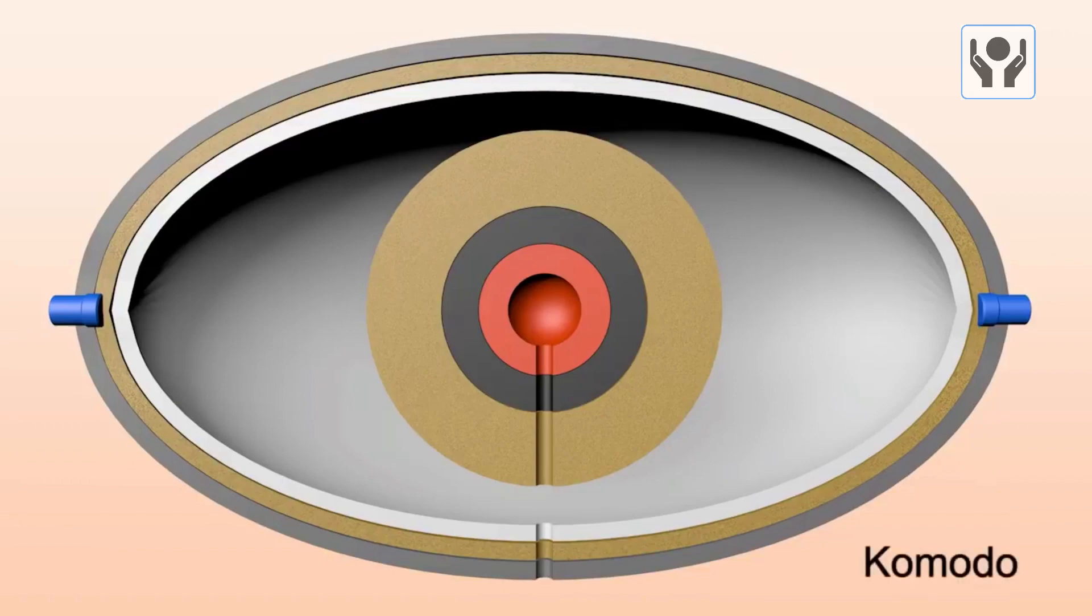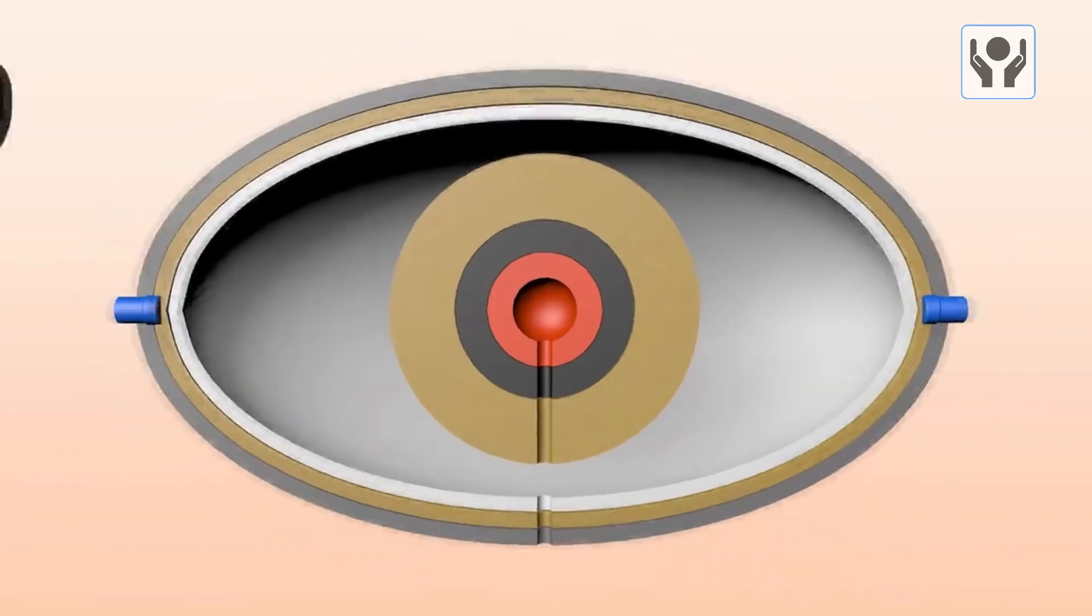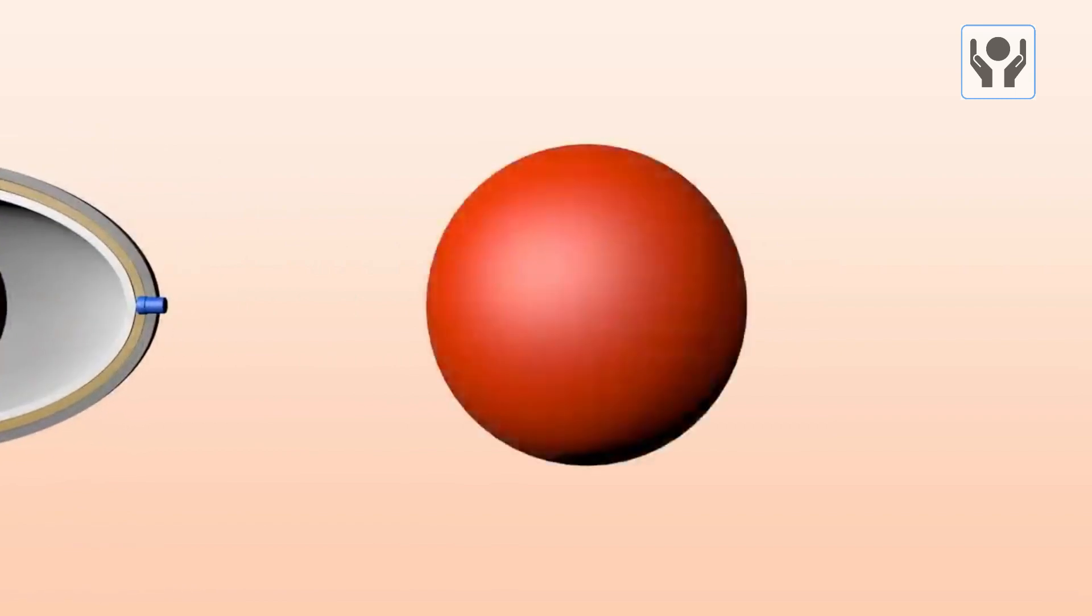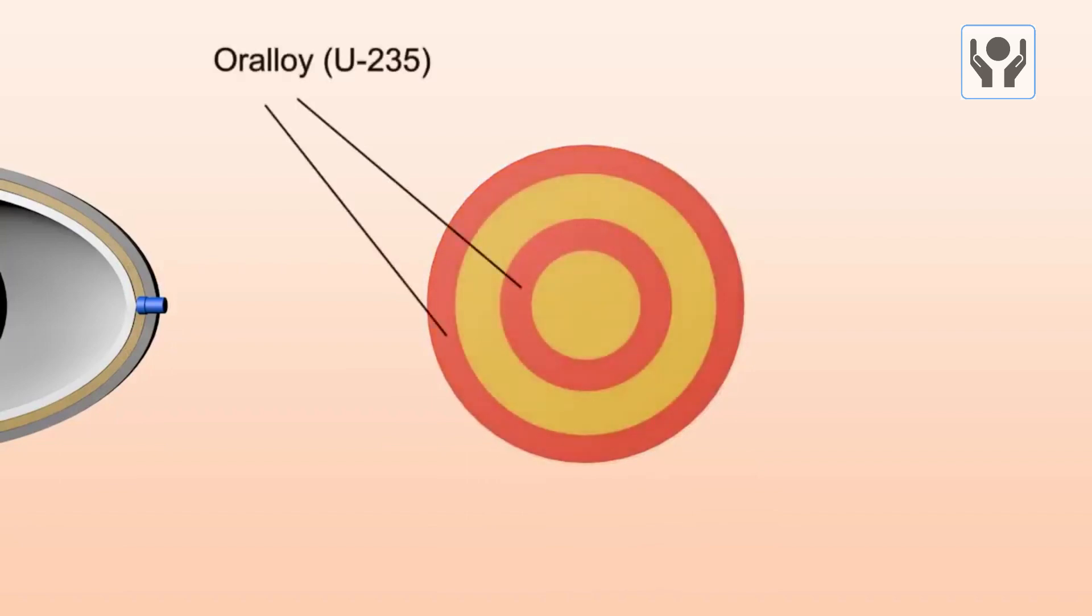A detailed look at the composition of a W-88 thermonuclear warhead would involve examining its various components and the processes involved in its operation. The warhead is comprised of multiple stages, including a primary stage and a secondary stage.